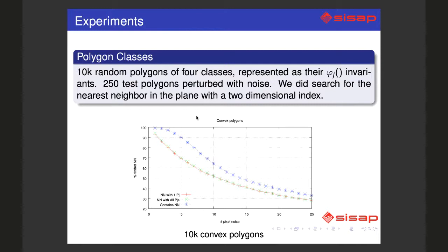We conducted the following experiment. For the four classes I described, we selected 10,000 random polygons and we represented them as their phi j invariants.